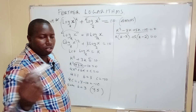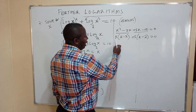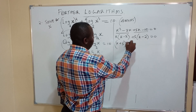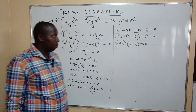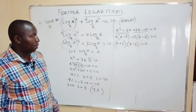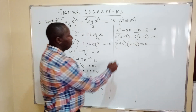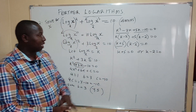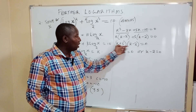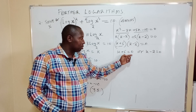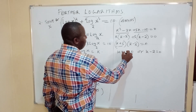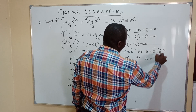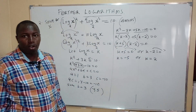Equating each factor to zero: k plus 5 equals 0, or k minus 2 equals 0. Therefore, k equals negative 5 or k equals 2.